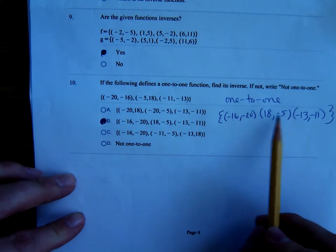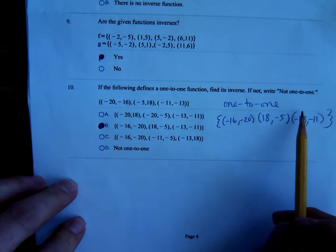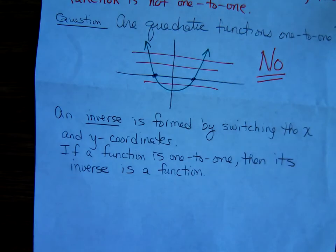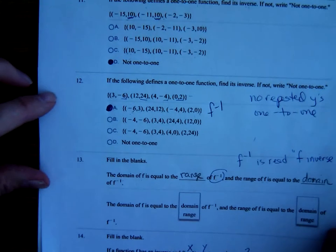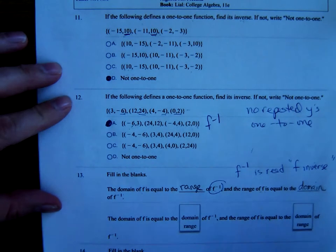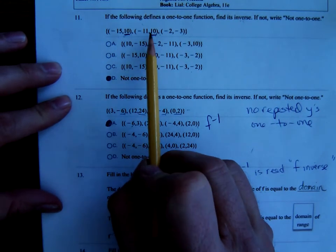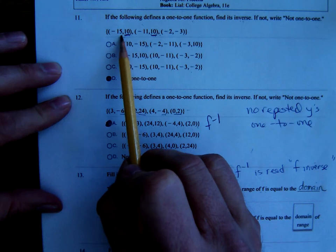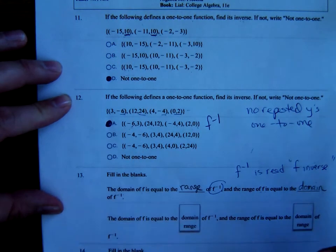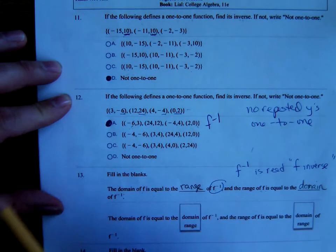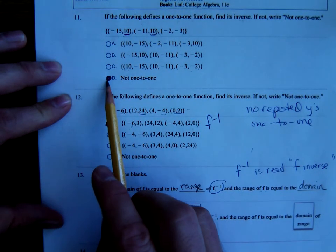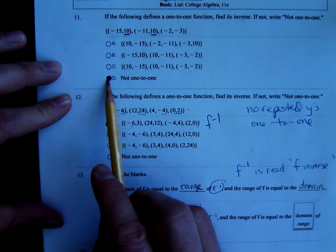Notice there are no repeated x's, this is one-to-one. Whereas with problem number 11, there's repeated y's on the function so its inverse wouldn't be a function. So the instructions if it's one-to-one find its inverse, if not write not one-to-one. This one's not one-to-one.